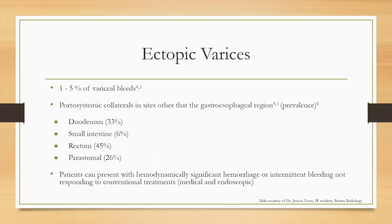Ectopic varices are so called because they occur in less common locations, and it's important to recognize them on imaging. They are a source of significant bleeding and morbidity, can present with hemodynamically significant hemorrhage unresponsive to conventional medical and endoscopic treatment, and are not well understood or studied. Treatment can be very difficult and variable depending on local expertise. These portosystemic collaterals can occur at sites other than the gastroesophageal region, including the duodenum, jejunum, rectum, and peristomal locations.